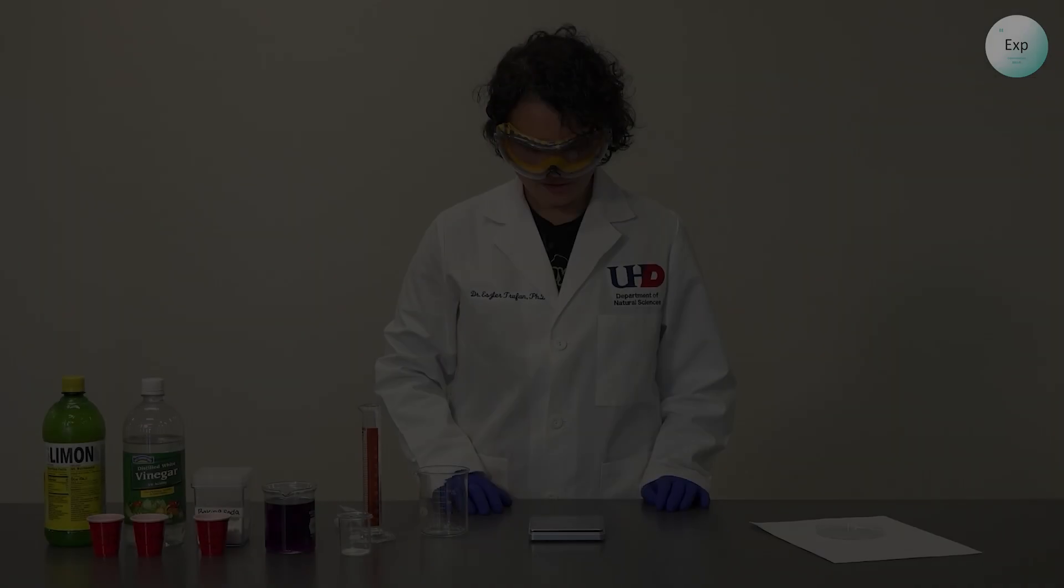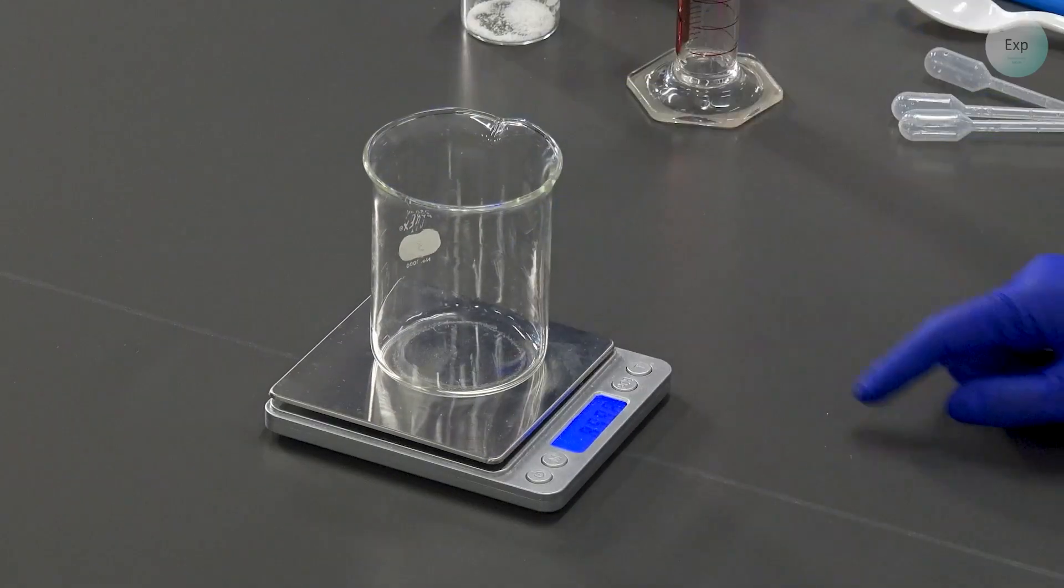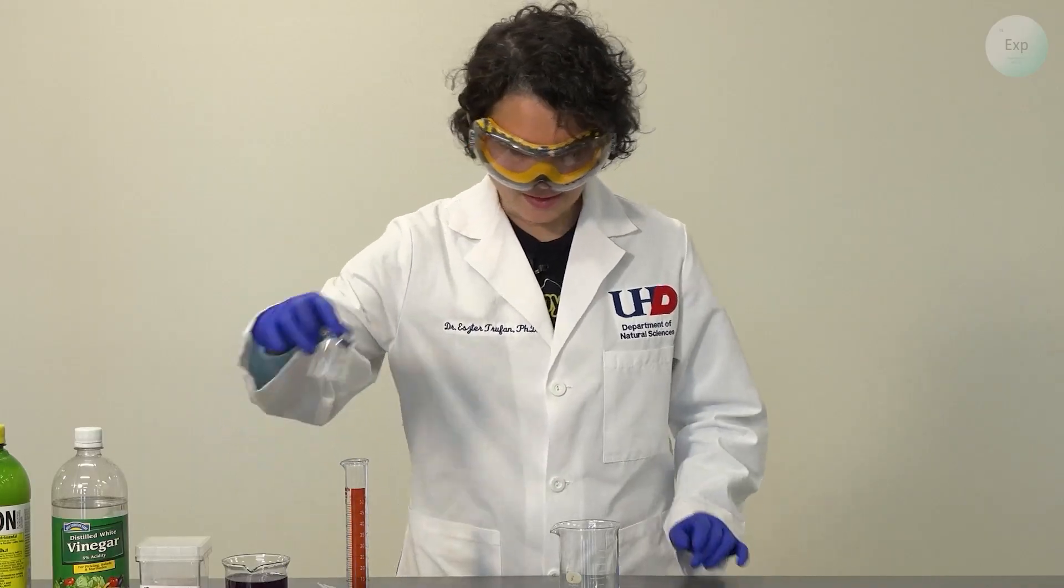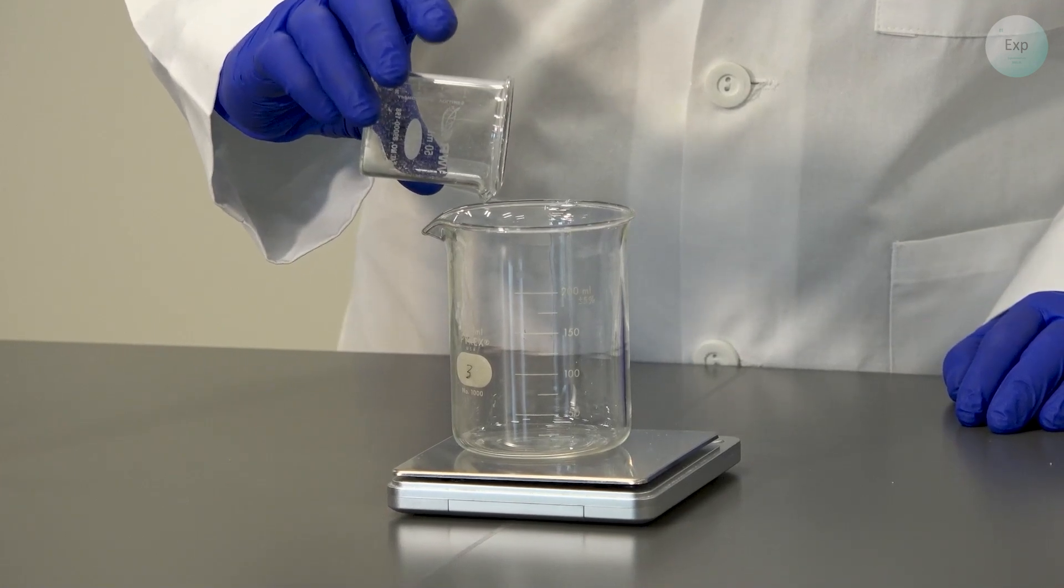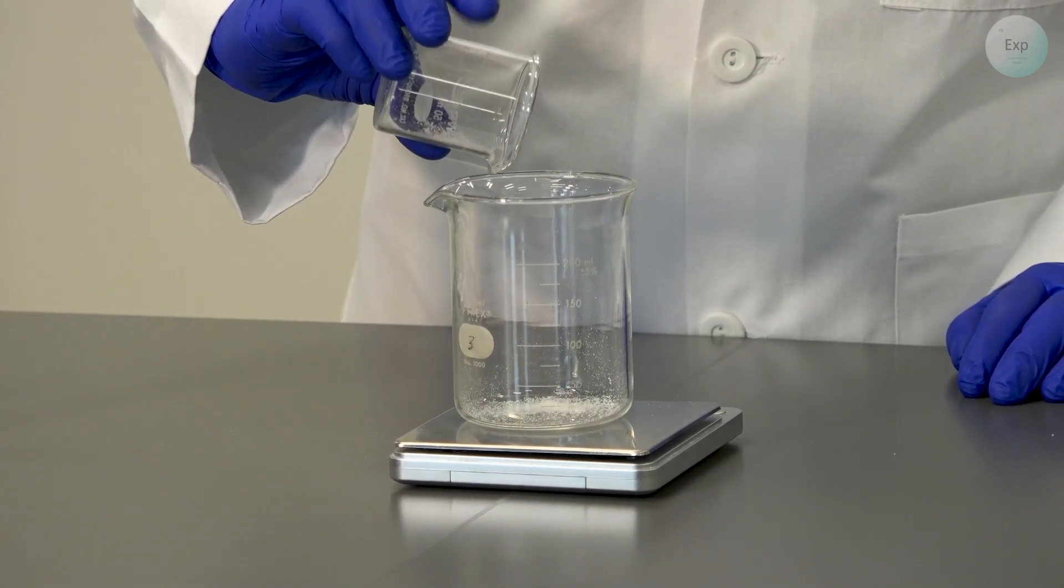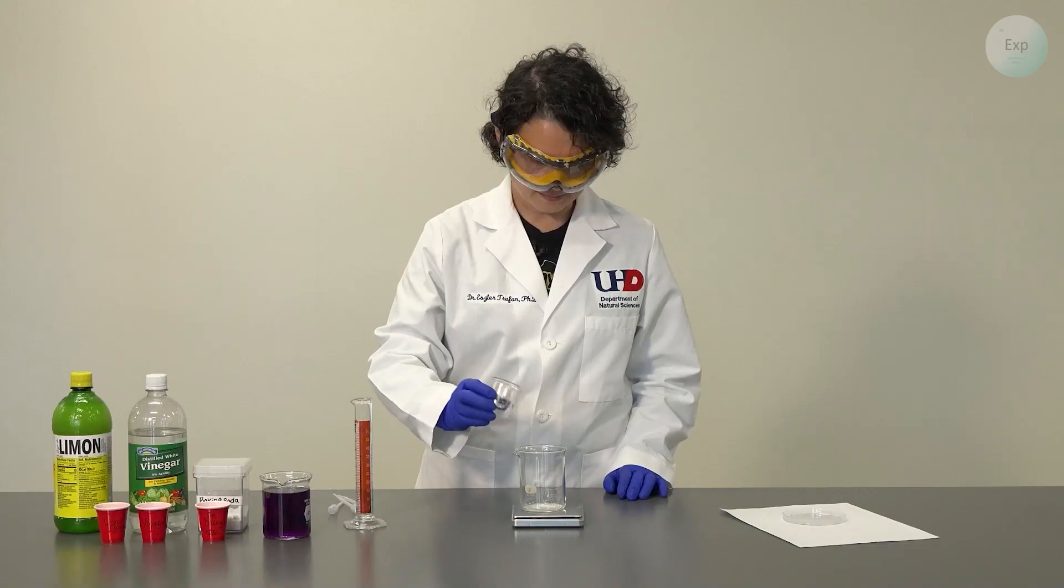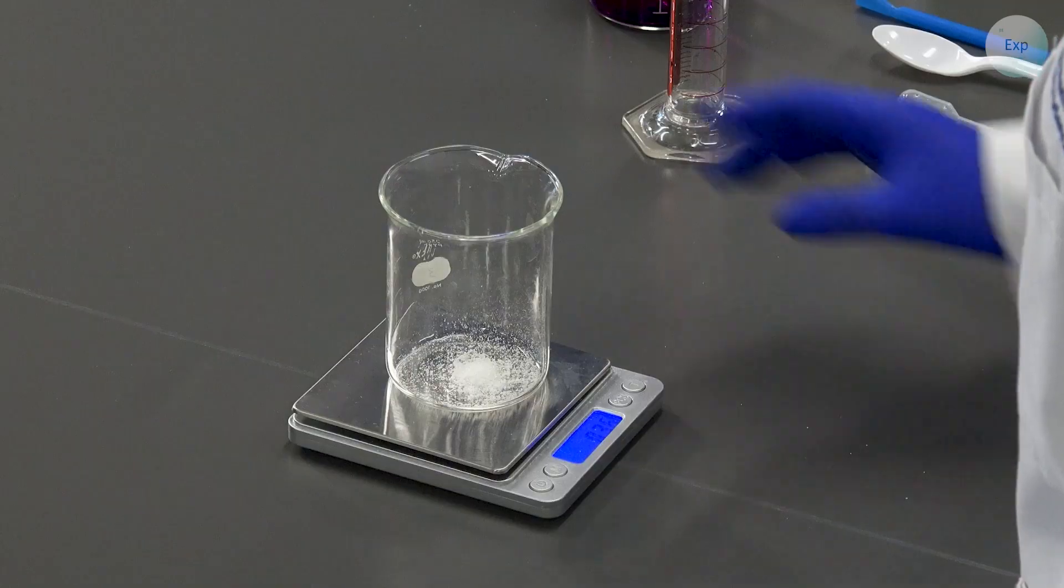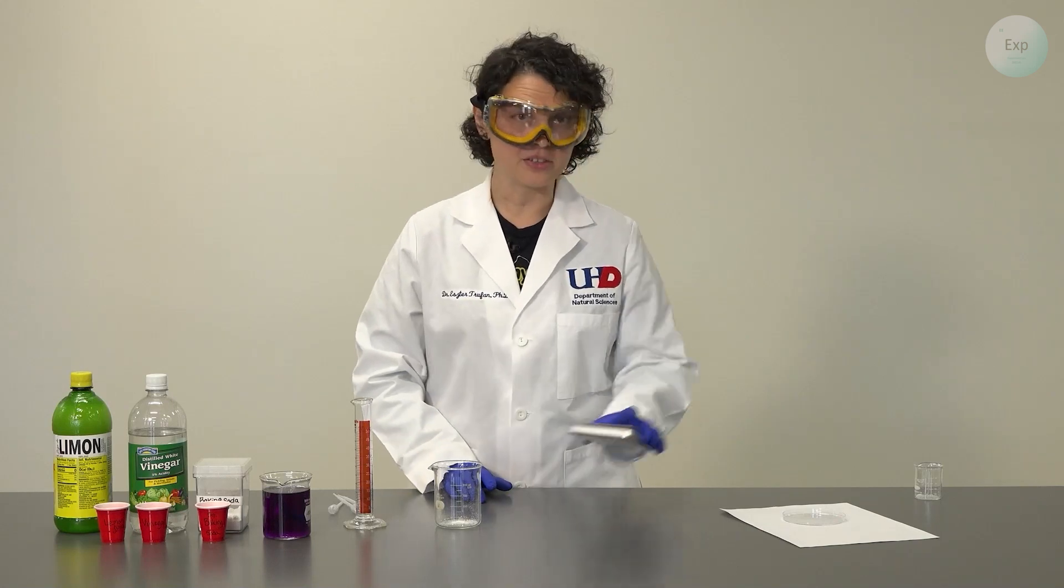So let's get started. To begin we're going to turn on our scale, place the beaker on top of it, tare it, and add the diaper polymer or sodium polyacrylate. I added 0.36 grams. With that I can set my scale to the side.